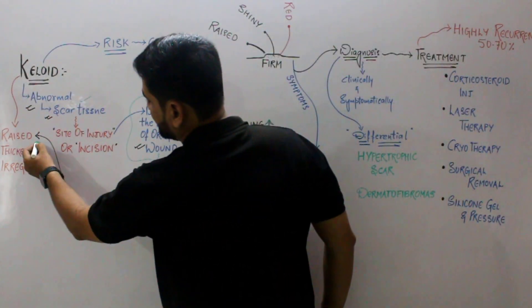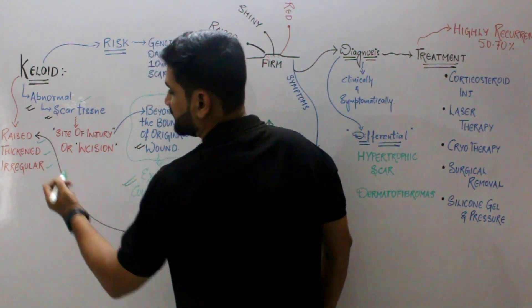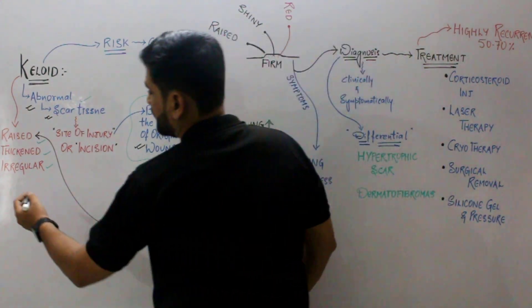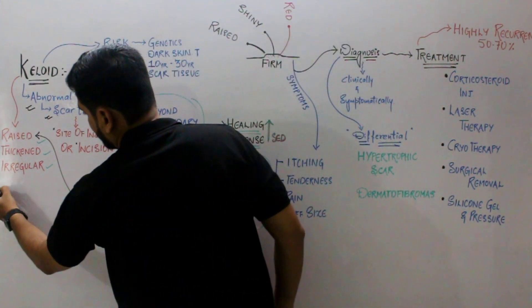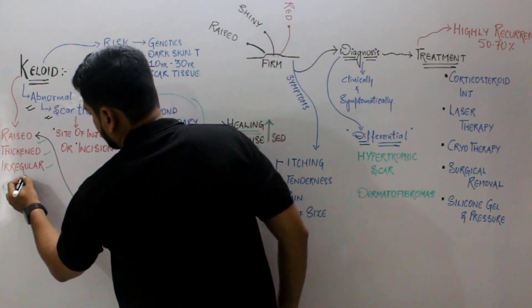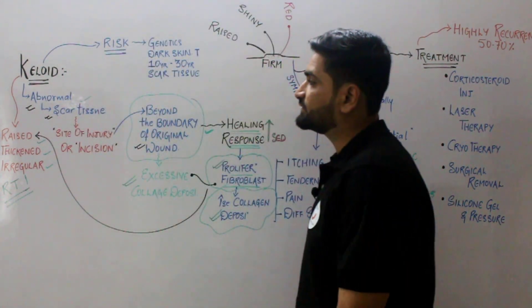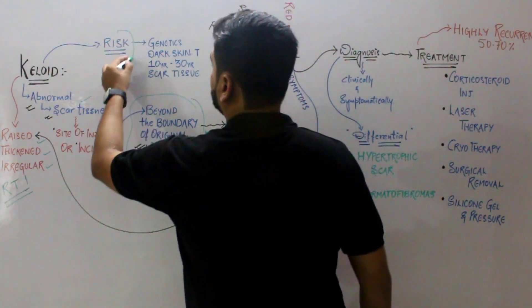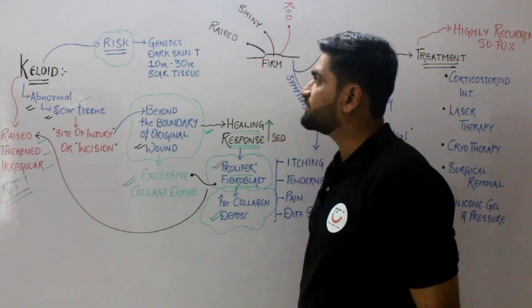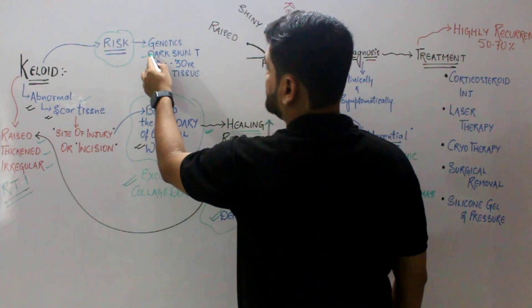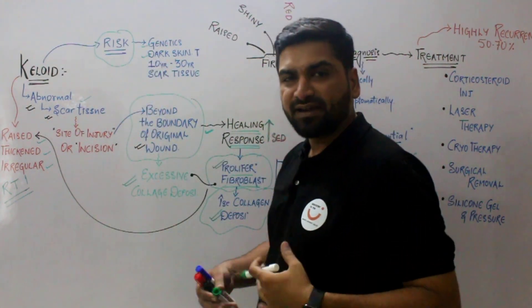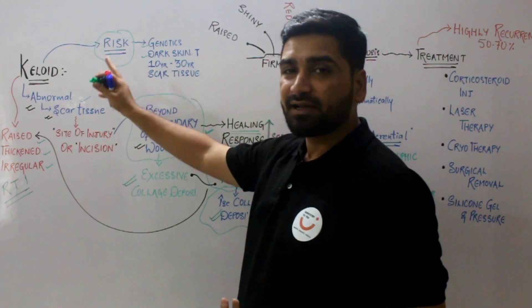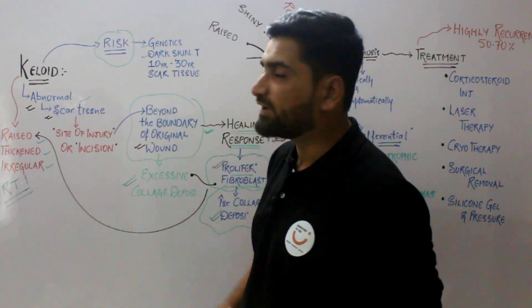How does this keloid look? It looks like a raised, thickened, and irregular mass. The risk factors associated with keloid include: firstly, genetic factors; secondly, people having dark skin tones are more predisposed or at risk for getting affected by this problem.